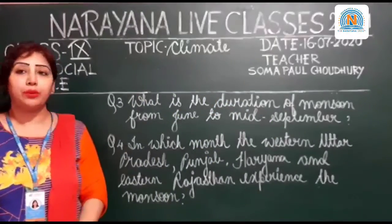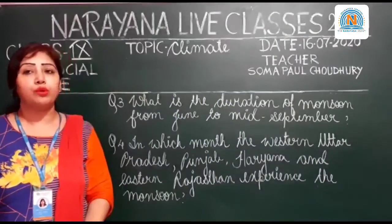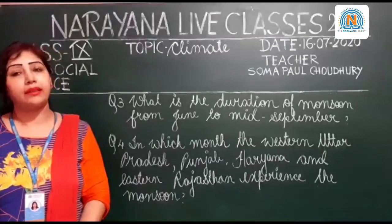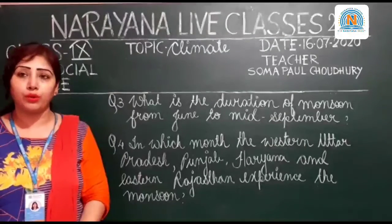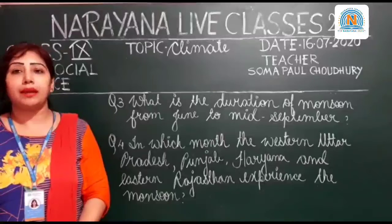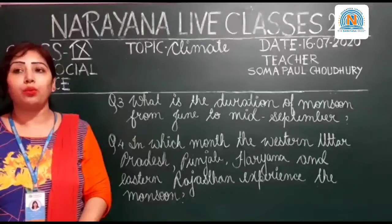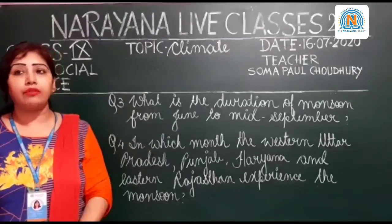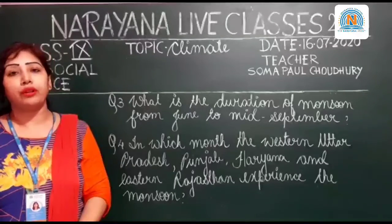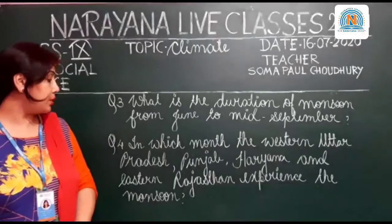Now let's move on to question number three. What is the duration of monsoon from June to mid-September? The answer is the duration of monsoon from June to mid-September is 100 to 120 days. Thus, we can say that the rainfall in India is concentrated over a few months.